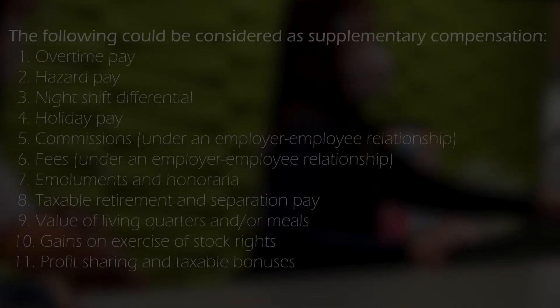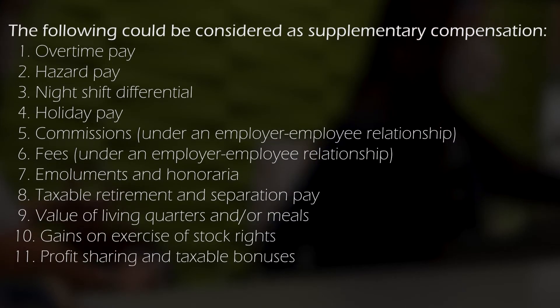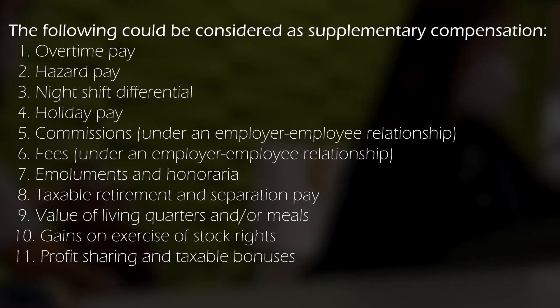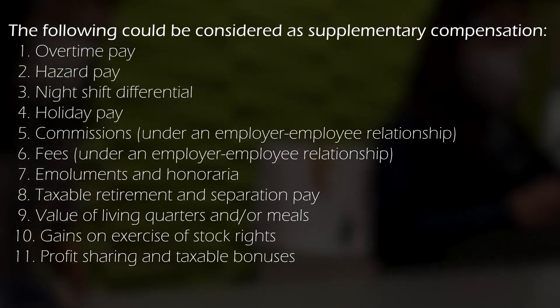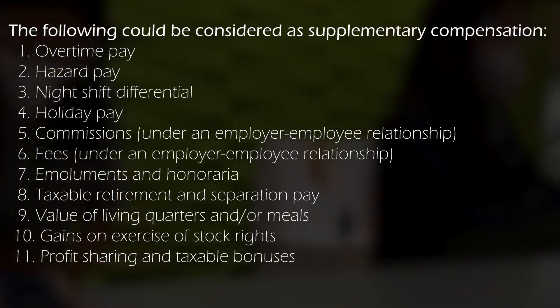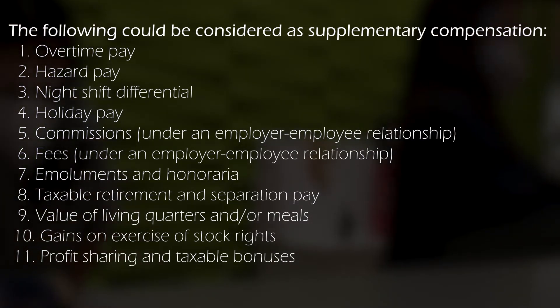The taxable income for an employee can generally include the regular salary, allowances, the excess of the statutory limit of the de minimis benefits, and the excess of the 90,000-peso limit of the 13th-month pay. In addition, the following may be counted as supplementary compensation and therefore could be taxable.